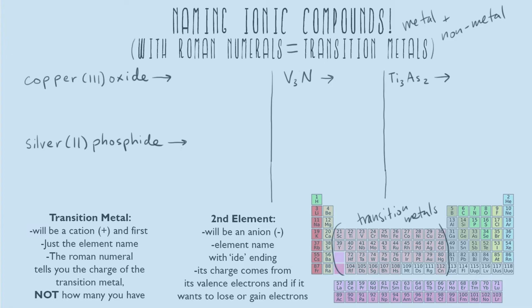The rules for this: when you have a transition metal, it's going to be a cation — positive — and it's going to be named first using just the element name. The Roman numeral tells you the charge of that transition metal. It just tells you the charge of each transition metal ion you have; it does not tell you how many of that metal you have. So let's start with copper(III) oxide.